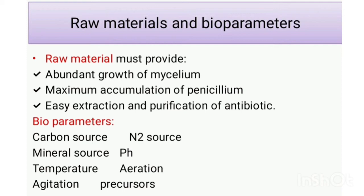The mineral sources include potassium, phosphorus, magnesium, sulfur, zinc, and copper, which are essential for the production of penicillin. Some of these minerals are supplied through corn steep liquor.